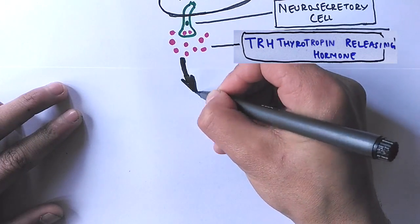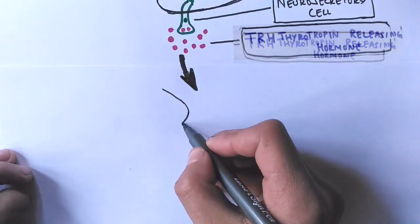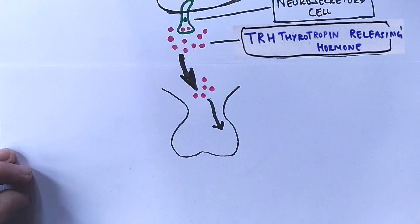Then this TRH, thyrotropic releasing hormone, will have a stimulatory effect on the pituitary gland. TRH travels across the median eminence to the anterior pituitary gland via a hypophysiac portal system.